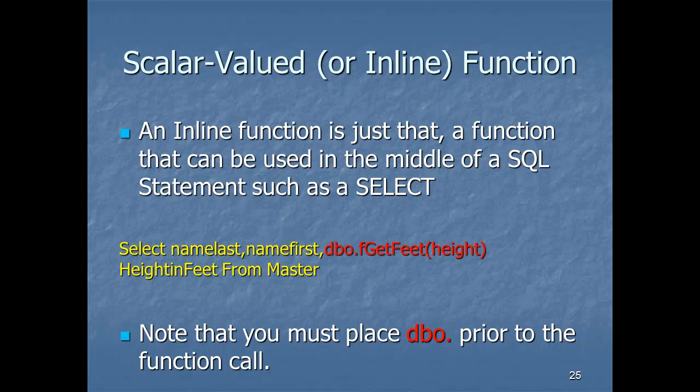Scalar functions, or inline functions, run at the column level — more like what you'd expect from Visual Basic or C#. In this example, fget_feet is a method we pass an argument in inches. The function's responsibility is to receive height in inches and deliver back height in feet. This resembles an aggregate function — really, these are custom aggregate functions. Note that I have a DBO dot in front of the fget_feet method, and there's an important purpose for that.